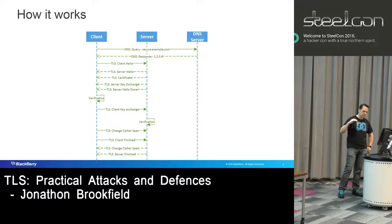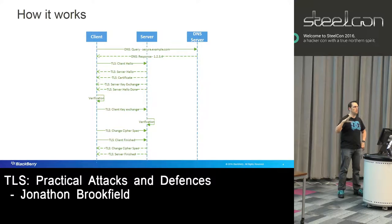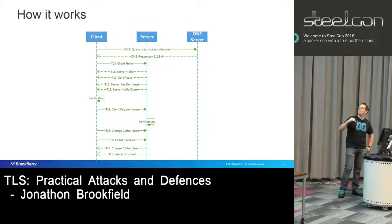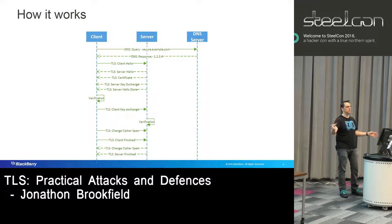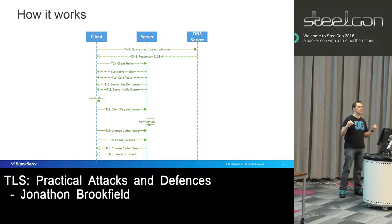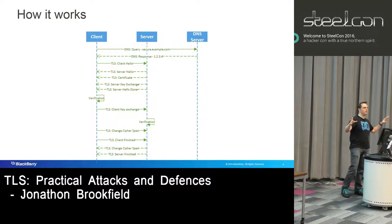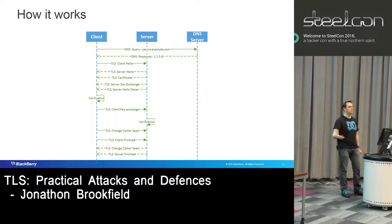At that point the server says it's done. The client then has to perform a certificate validation check on the server side. Once it's done that and is happy, it'll send the client key exchange message. This is the message that actually contains the key material from the client to the server. Everything up till now has been in the clear. Once this packet is sent, both sides have agreed a symmetric key, and then they'll switch to using that for encryption and integrity for the protocol.